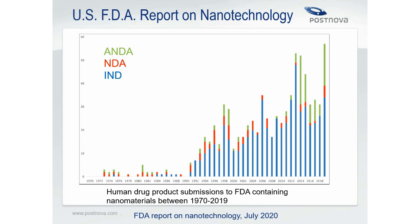Since 1970, the US FDA Center for Drug Evaluation and Research has received more than 600 applications for human drug products containing nanomaterials. This graph from a report by the US FDA in July 2020 illustrates the number of submissions received, further classified as abbreviated new drug application, new drug application, and investigation of new drug. Half of the 600 applications containing nanomaterials were submitted within the last 10 years.